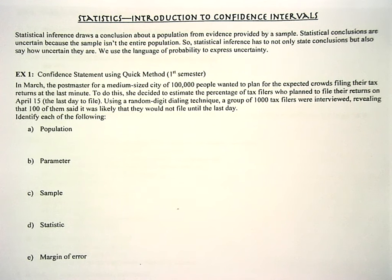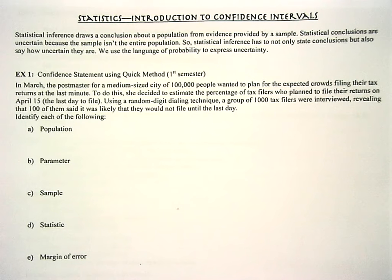Statistical inference draws a conclusion about a population from evidence provided by a sample. Statistical conclusions are uncertain because the sample is not the entire population. So statistical inference has to not only state conclusions but also say how uncertain they are. We use the language of probability to express this level of uncertainty.